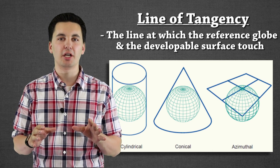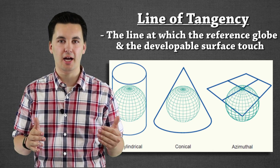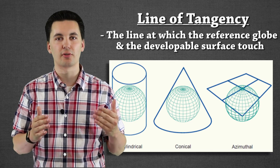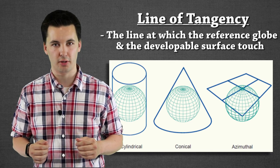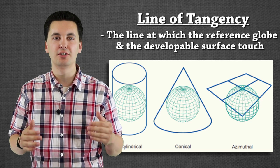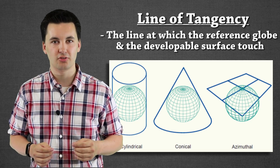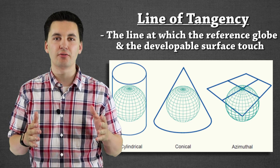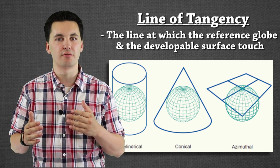Essentially what's happening here is wherever we're seeing a contact made, that's where we're going to transfer the information from the globe onto our developed surface. And that's going to be important to understand because each of these will have a different form of a line of tangency, because they're going to have a different amount of the world touching our developable surface.